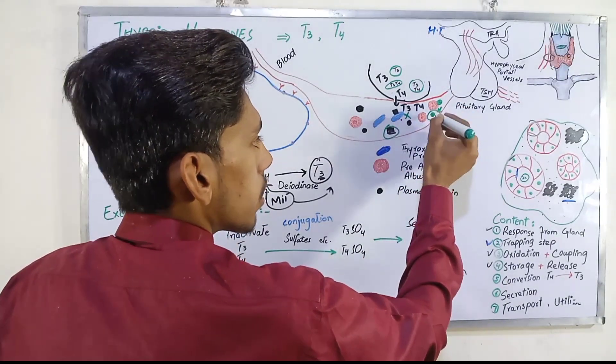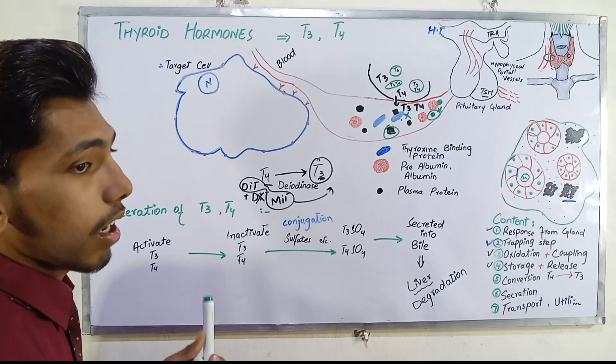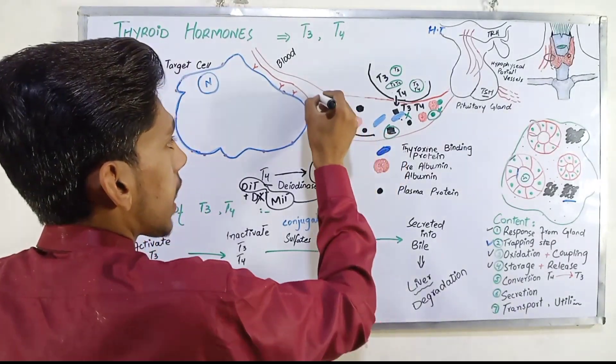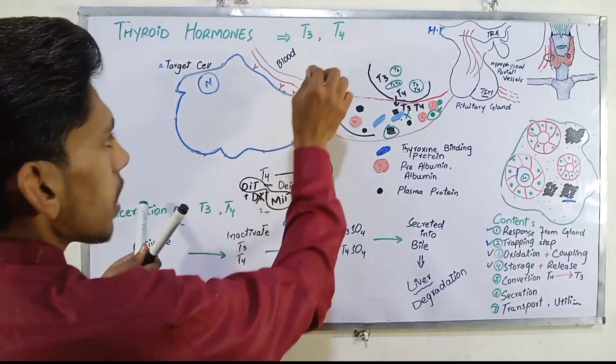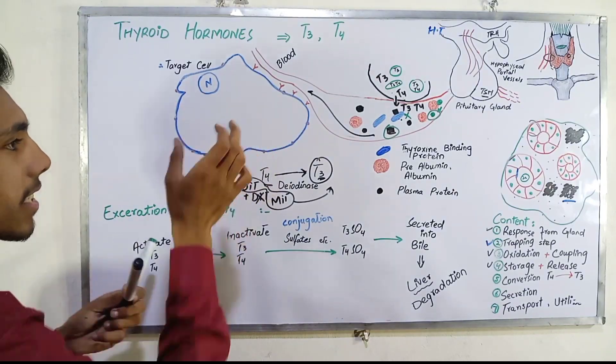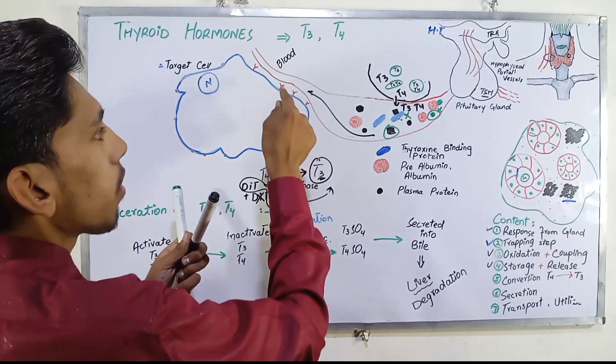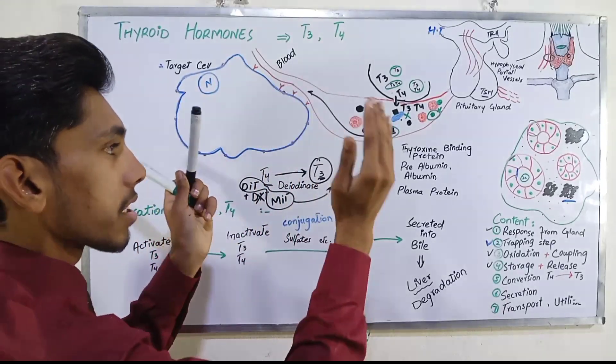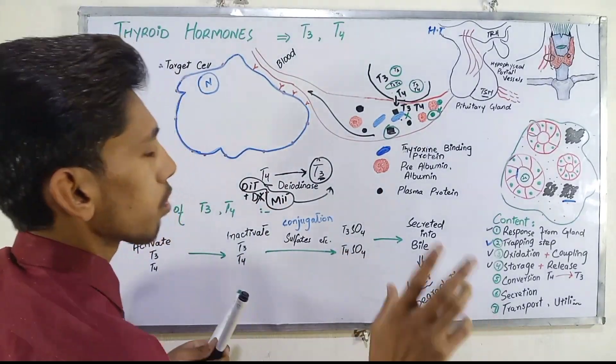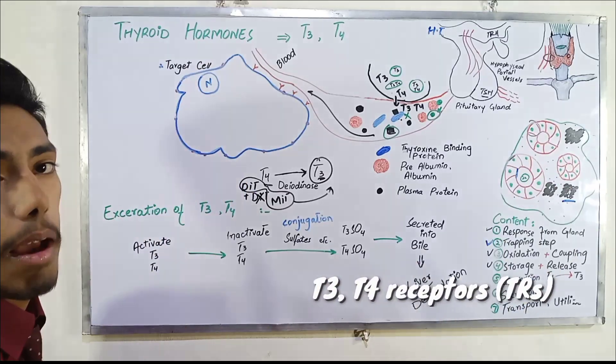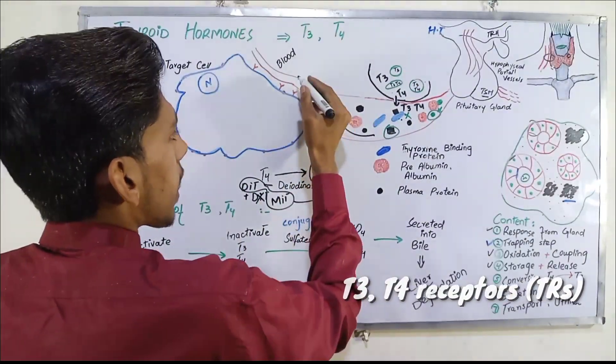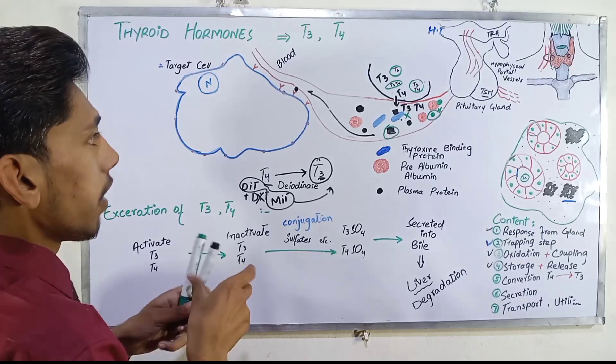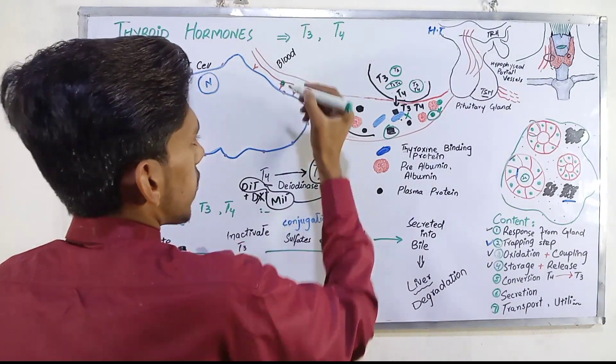Free T3 and T4 components and compounds move freely to target cells. Target cells have an external wall. T3 and T4 enter into cells.